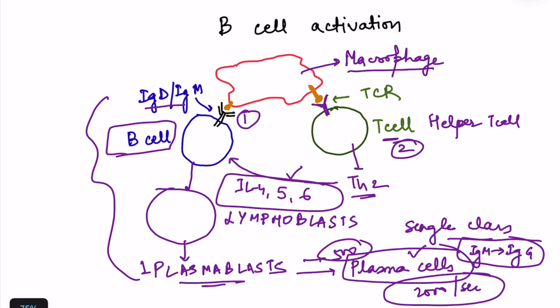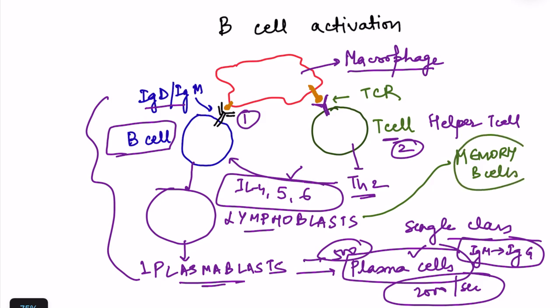Memory B cells move into the circulation and sit in all lymphoid tissue throughout the body, so that even if secondary exposure occurs at a different site from the primary exposure, the response will be much better than the primary response. We will see the differences between primary and secondary immune response a little later.